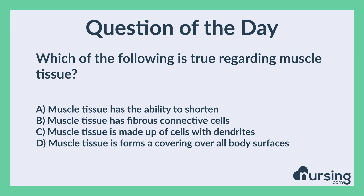The correct answer is A. Muscle tissue has the ability to shorten. Muscle tissue is made up of cells that can shorten or contract in order to move the attached structure.